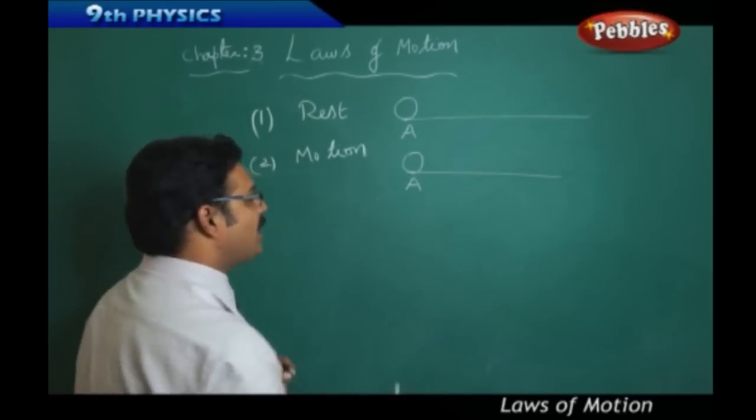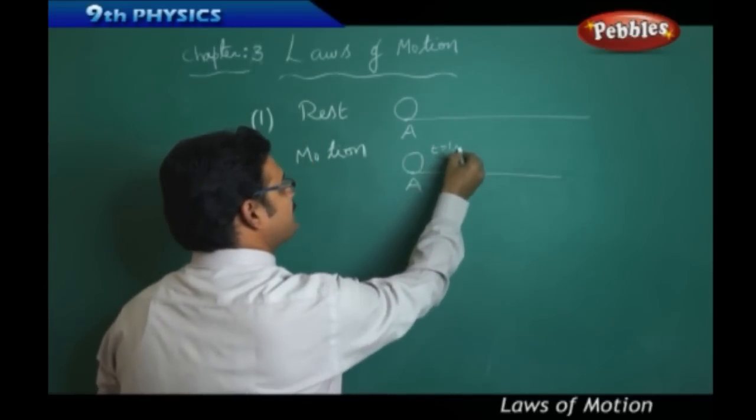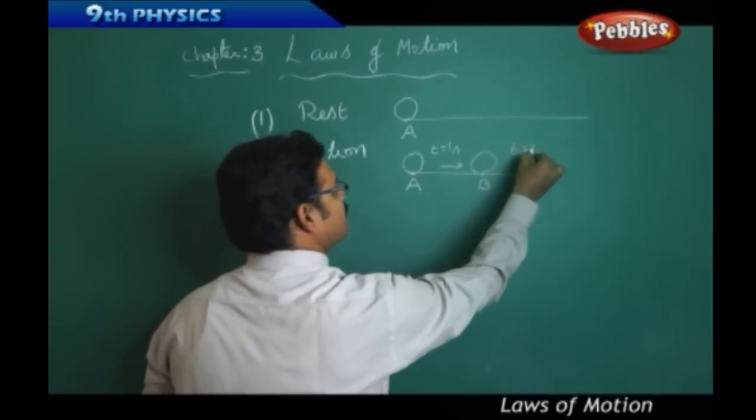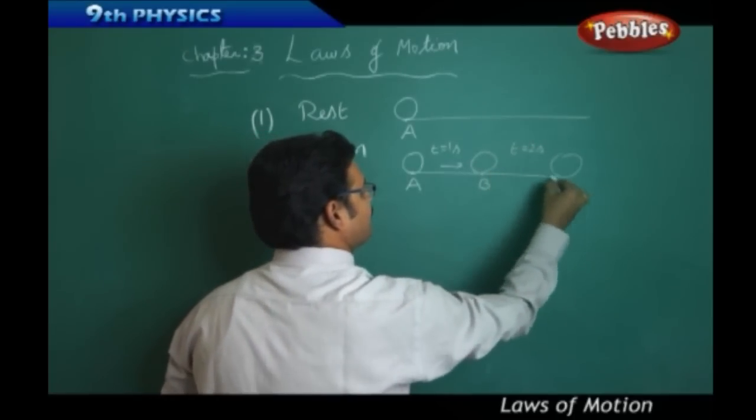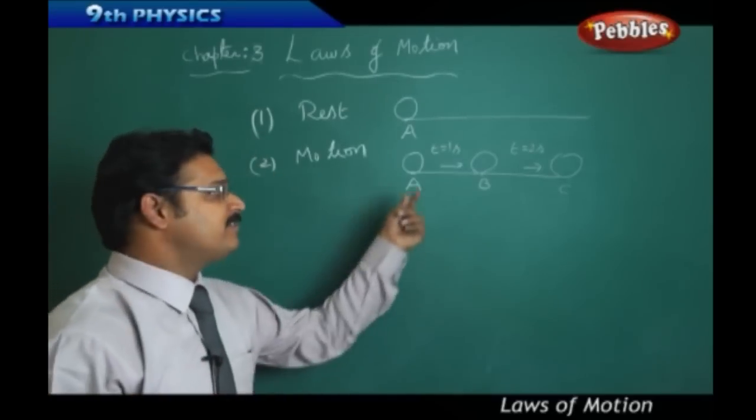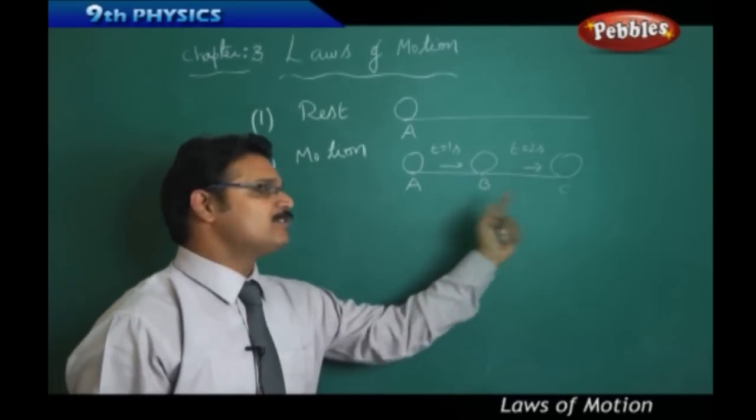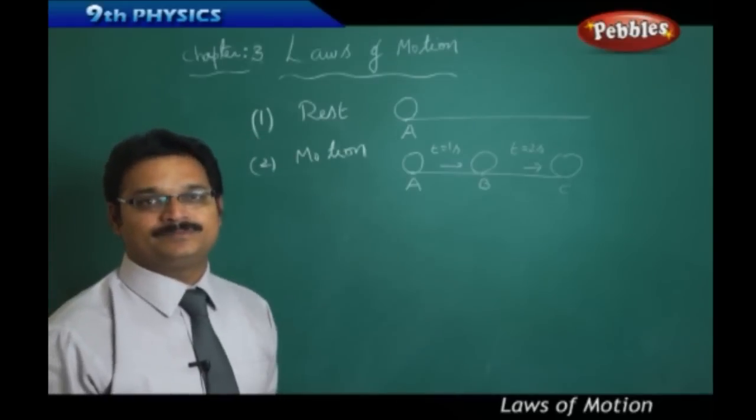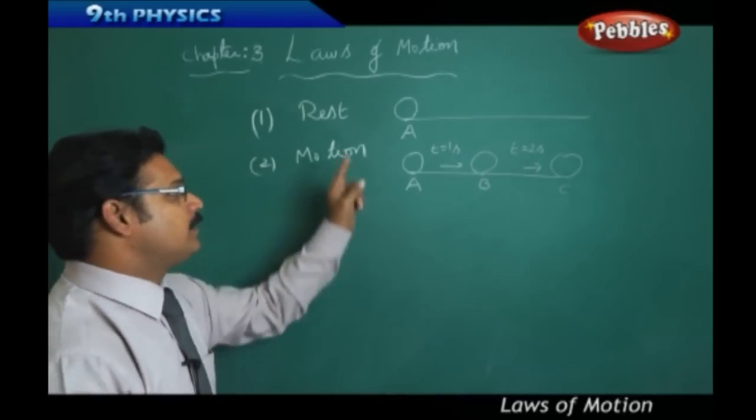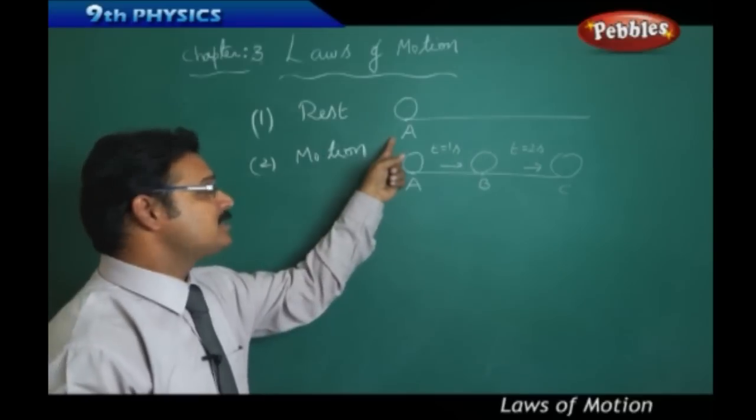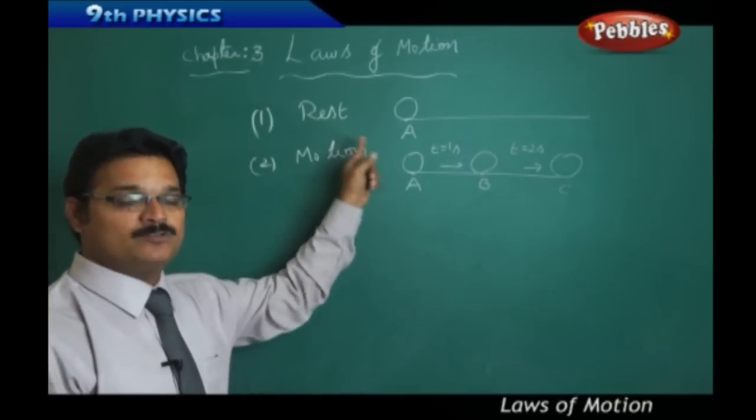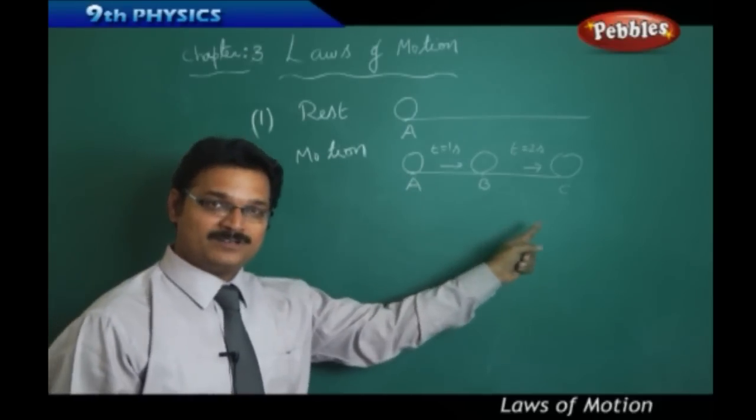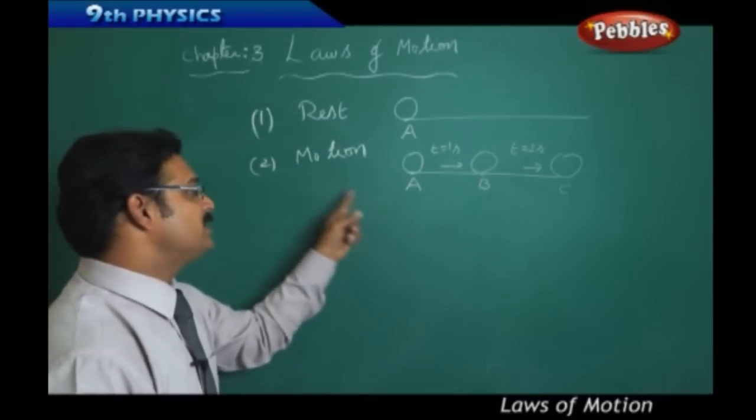The same ball initially is at A. After t equals one second, now it is at B. After t equals two seconds, the ball is at C. For different timings the ball is changing its location from A to B to C, then we say the ball is in motion. The body which is not changing its location with respect to time is at rest. The body which is changing its location with respect to time is in motion.